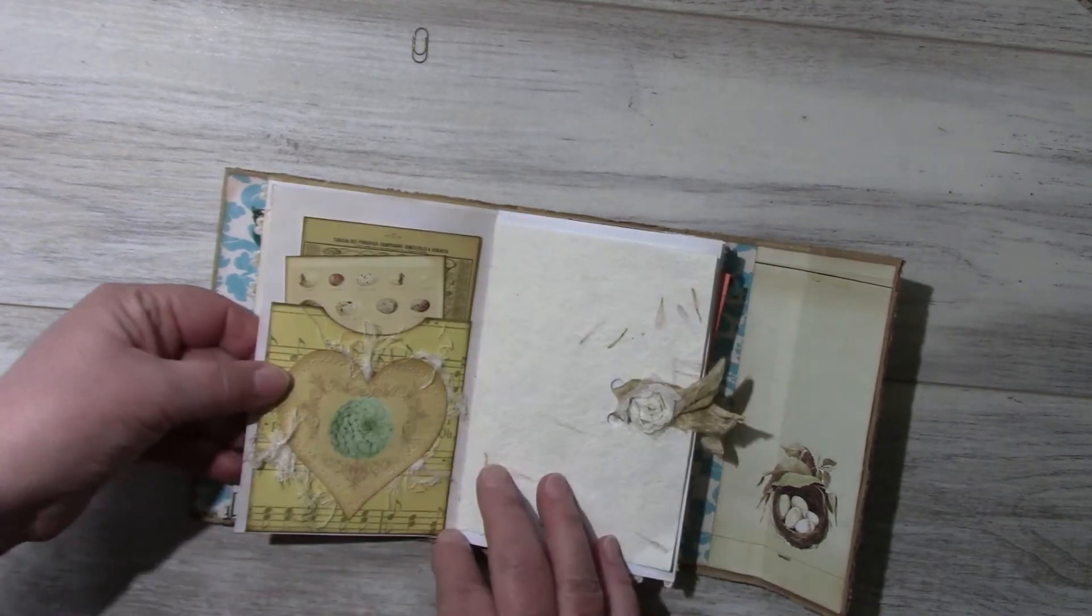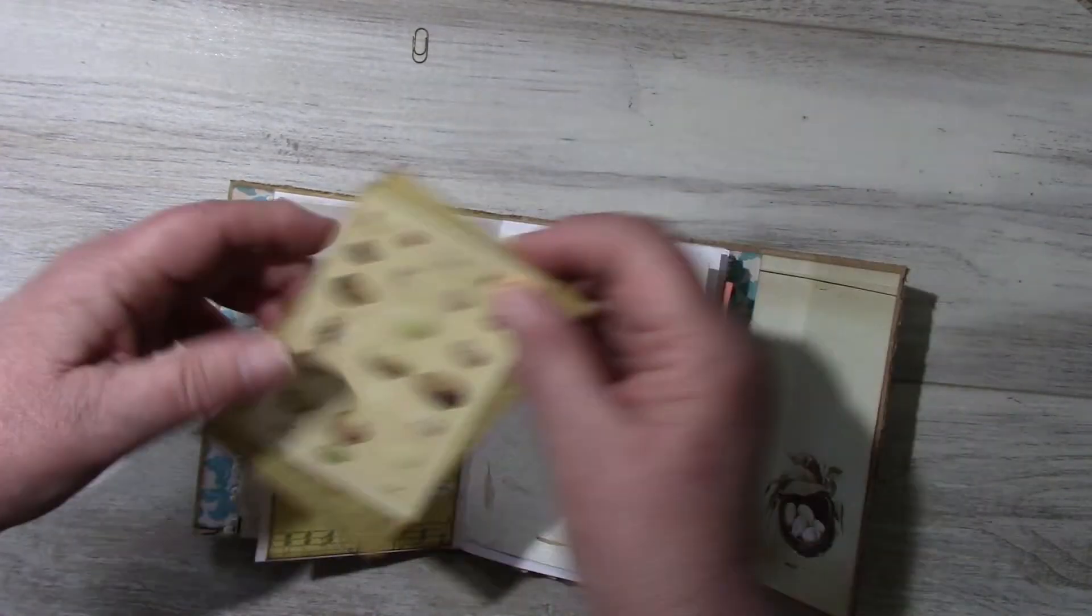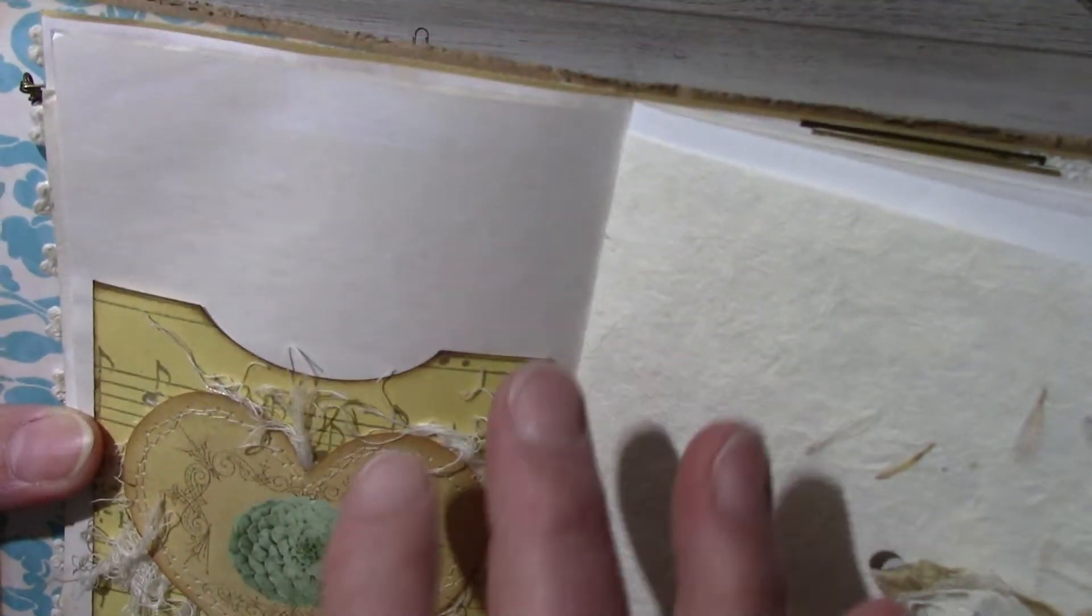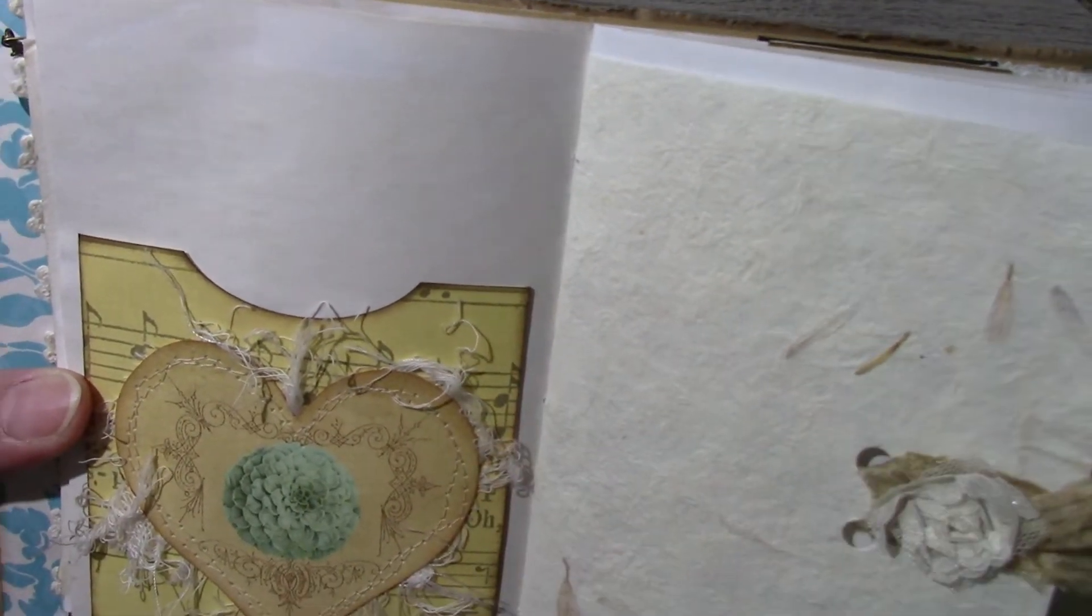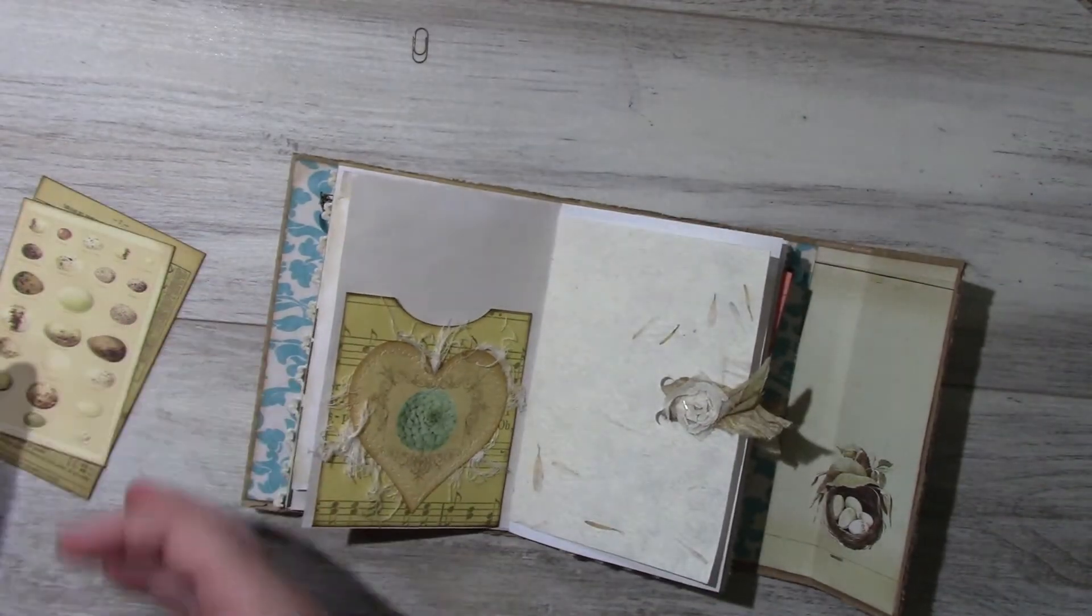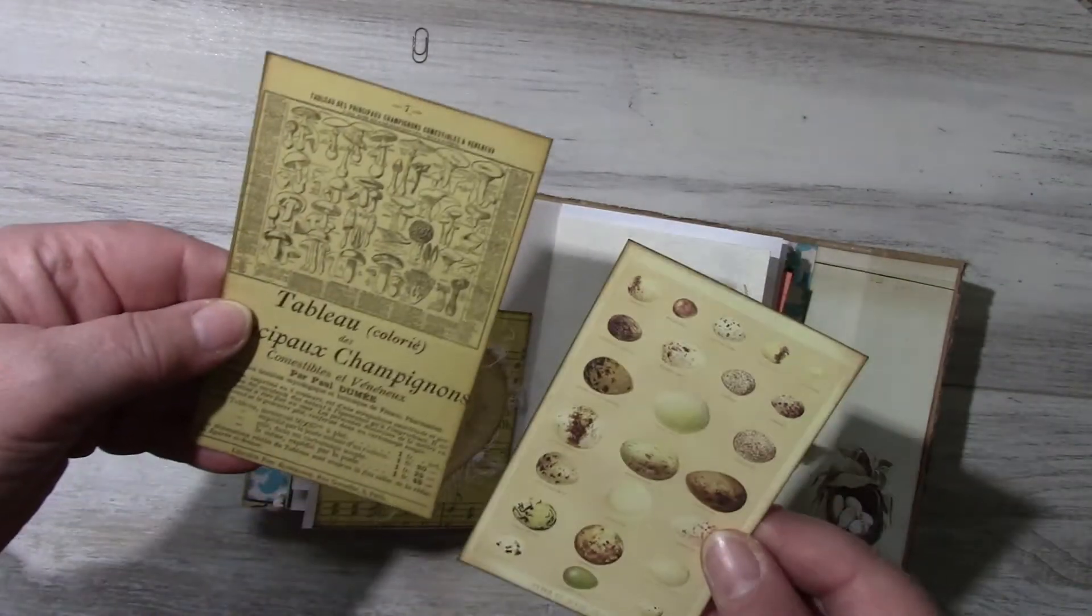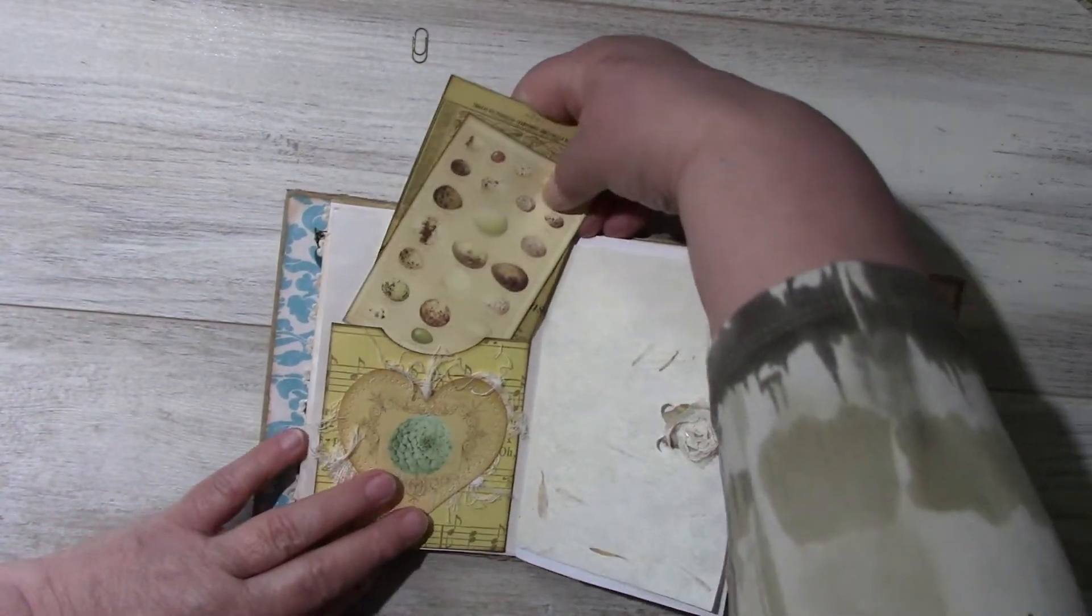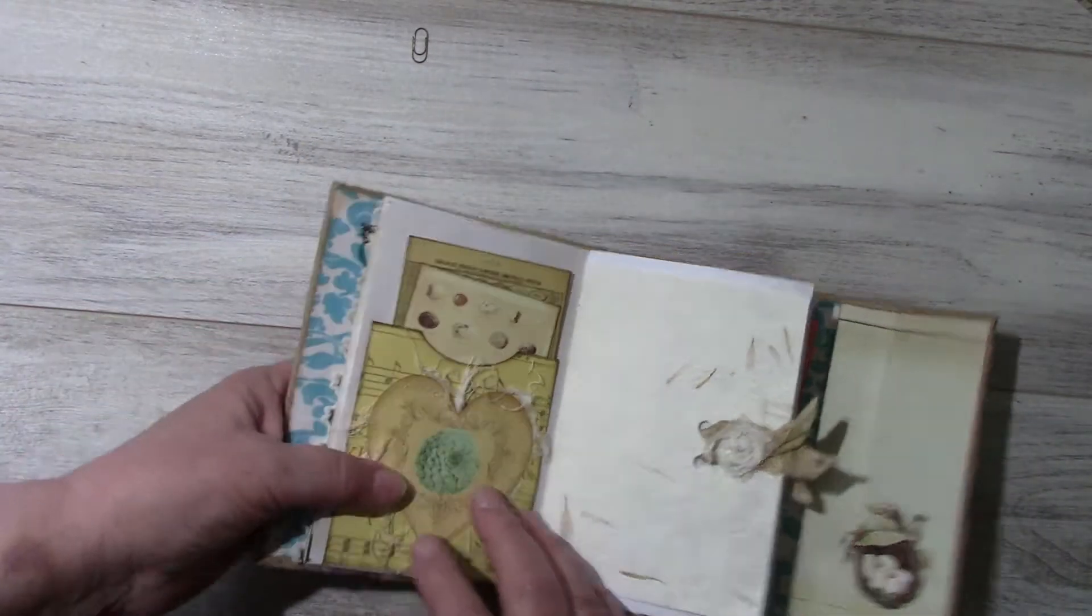Another pocket, I did some sewing here. This is some cotton trim that I like very much. Some drilling cards. Here is some rice paper with some botanical items inside.